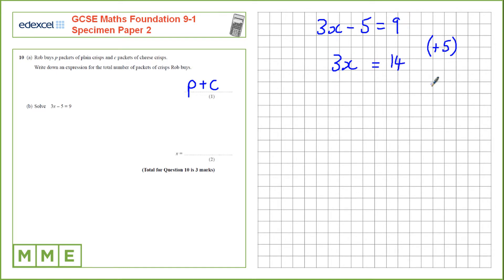We want x on its own, so we're going to divide by 3, since we've got 3 times x, we want to divide to get rid of the multiplication by 3. So 3x divided by 3 is x, and 14 divided by 3 is 14 over 3. We could write that as a decimal simply by doing 14 divided by 3 on the calculator.